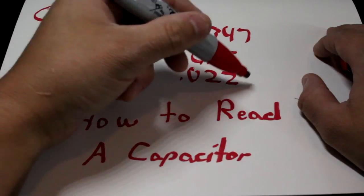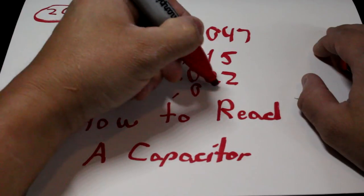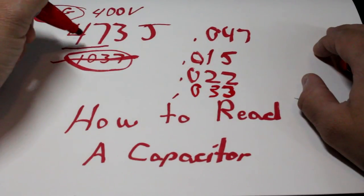If this was a .022, it would be a 2, 2, 3. If this was a .033, this would be a 3, 3, 3.